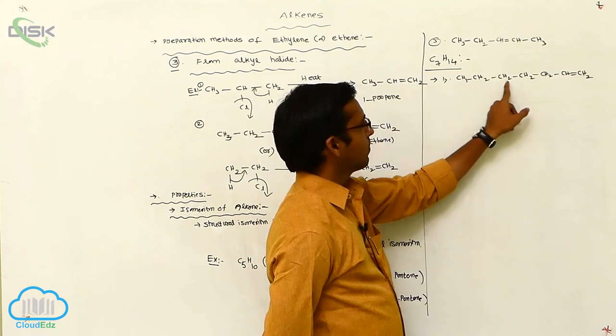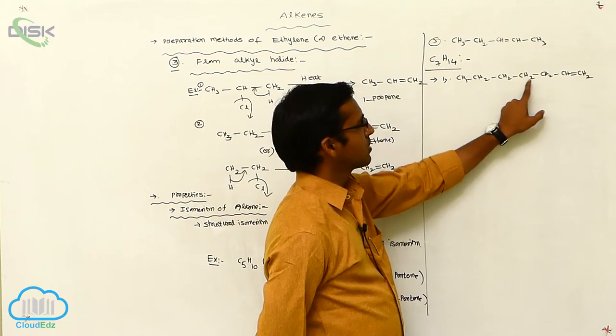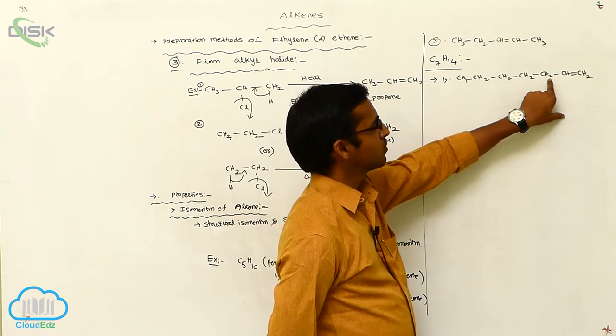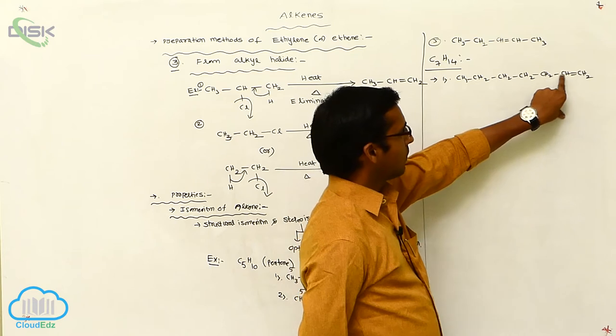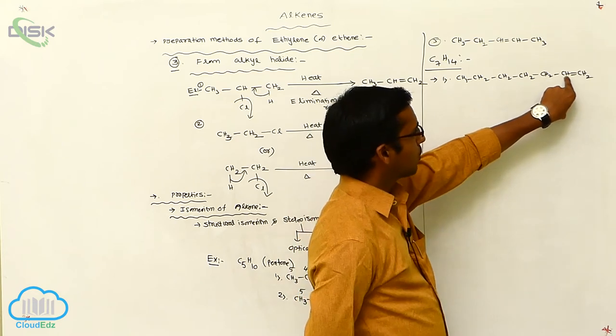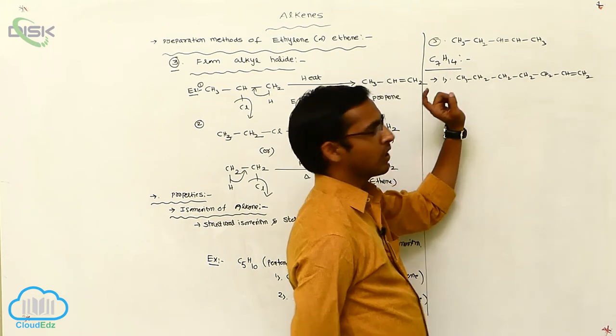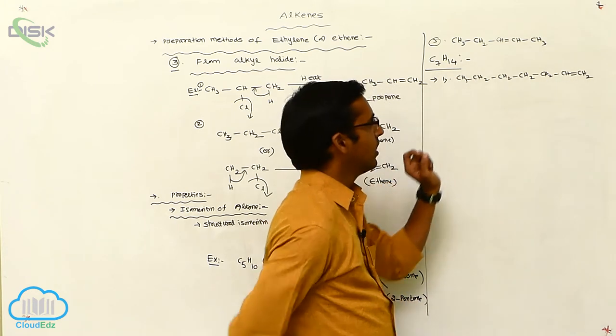3 plus 2 is 5. 5 plus 2 is 7. 7 plus 2 is 9. 9 plus 2 is 11, 12, 13, 14. So, 14 hydrogens are present.